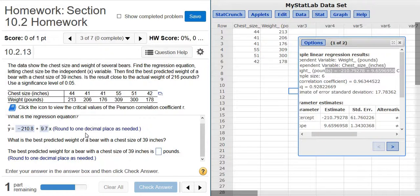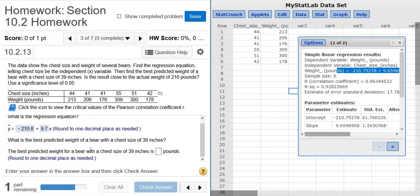Okay, it says, what is the best predicted weight of a bear with a chest size of 39 inches? Okay, here's where you have to be really careful. So before we answer this question, we have to determine if we have a straight line pattern. In other words, is the correlation significant?